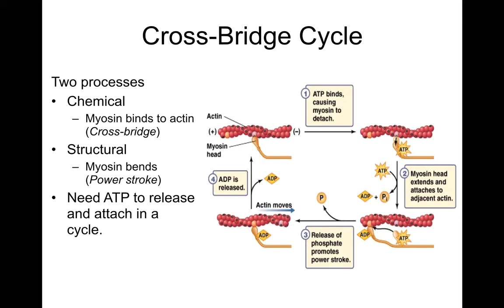Where the ATP comes in is when you want to release the myosin head so that it can move and attach to the next binding site in the next cycle. The thermodynamically favorable state is bound and contracted, so it needs ATP to release and start over again.